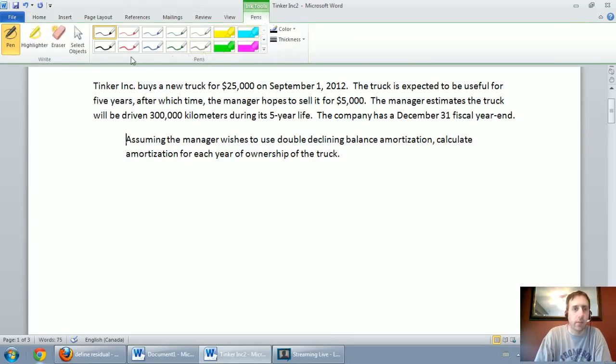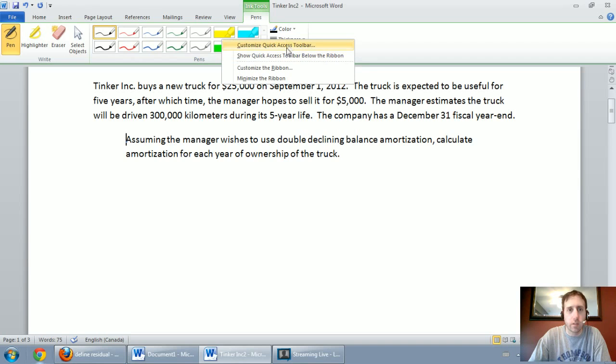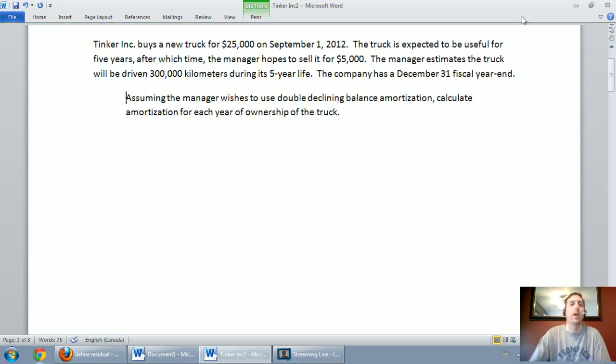Let's read through the question. Tinker Inc. buys a new truck for $25,000 on September 1, 2012. The truck is expected to be useful for five years, after which time the manager hopes to sell it for $5,000. The manager estimates the truck will be driven for 300,000 kilometers during its five-year life. The company has a December 31st fiscal year. Assuming the manager wishes to use Double Declining Balance amortization, calculate the amortization for each year of ownership of the truck.